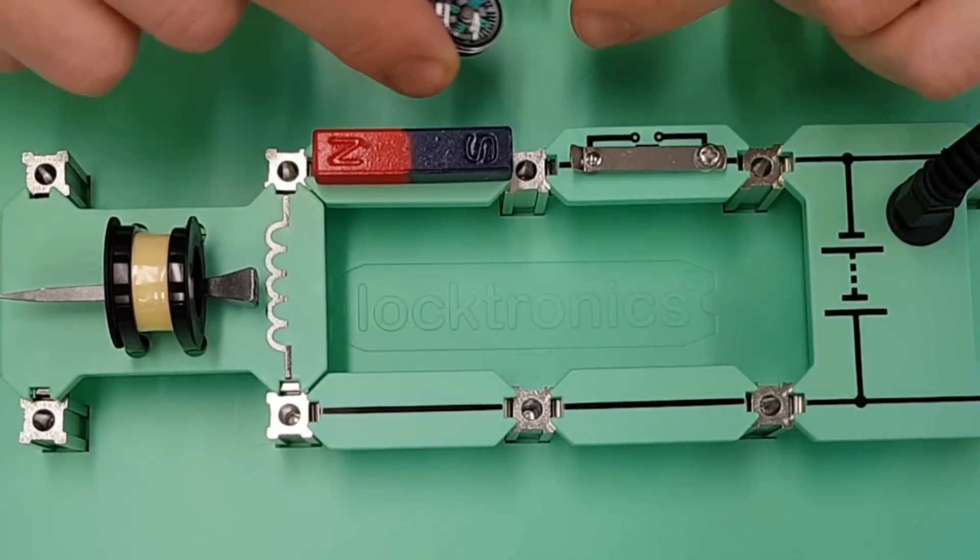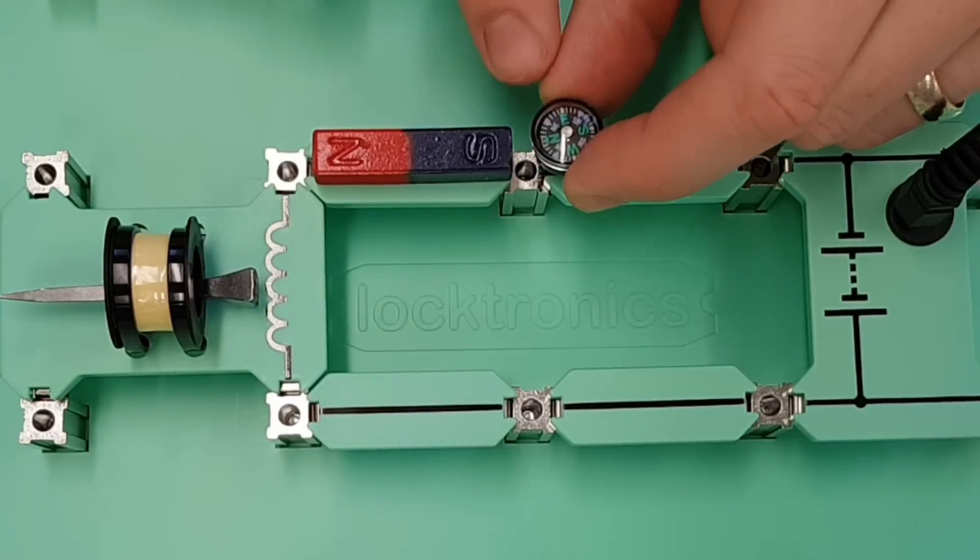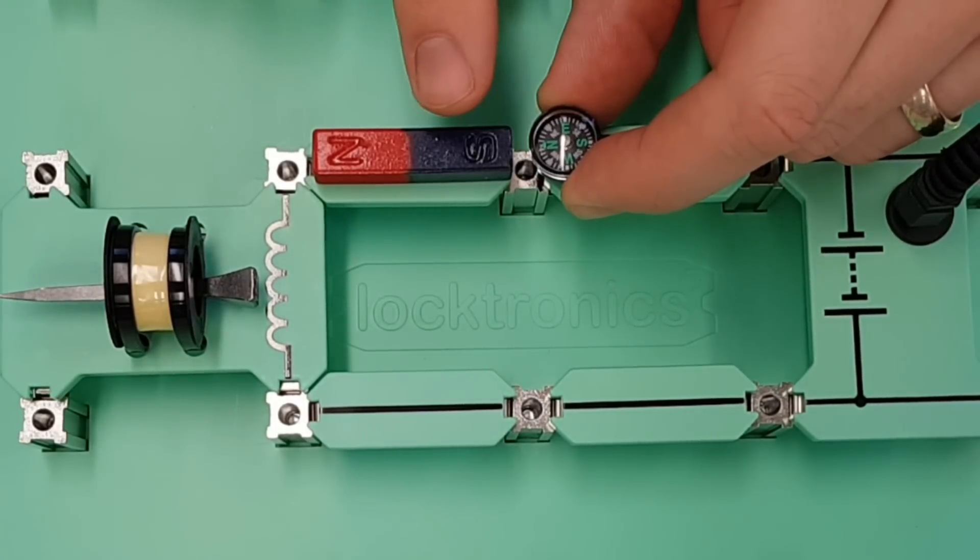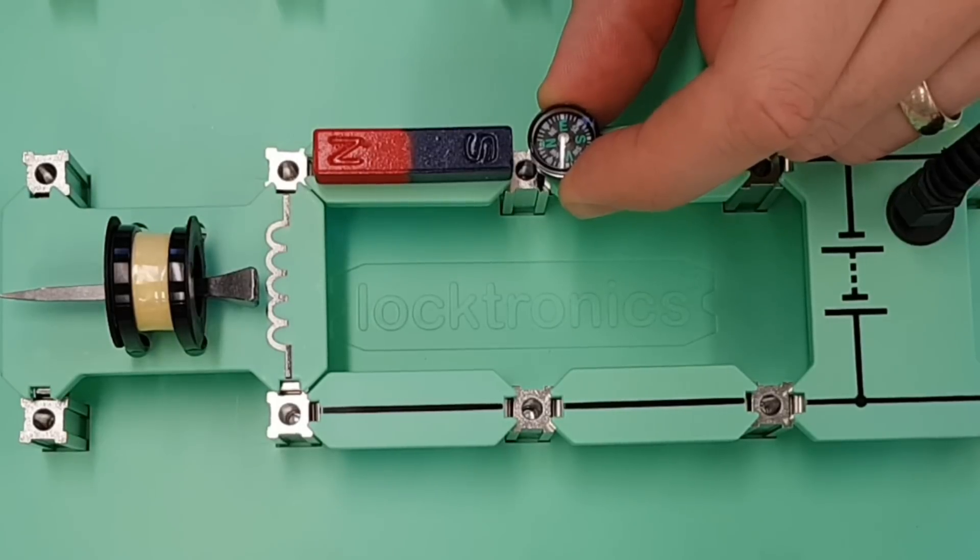So if we bring that around here again, you can see that the north pole is now pointing towards the south pole, but that indicates that it is the south pole. It's just lining up with the lines of magnetic flux.